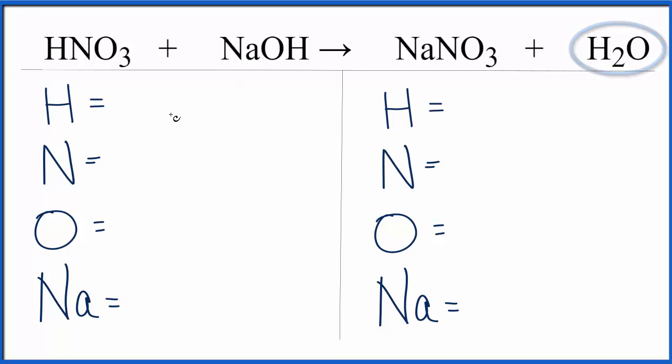So we can count the atoms up on each side of the equation. We have one hydrogen, and don't forget, we also have a hydrogen here. So we have one plus one, and that'll give us a total of two hydrogen atoms.